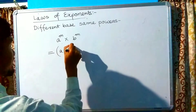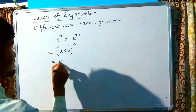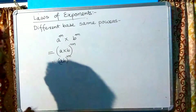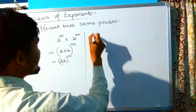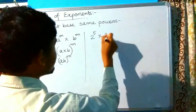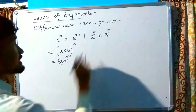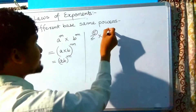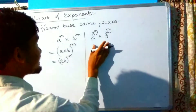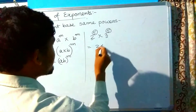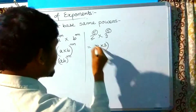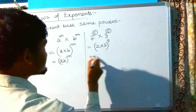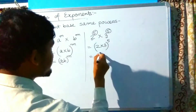Law 4 — Different base, same power: a raised to the power m multiplied by b raised to the power m equals (a multiplied by b) whole raised to the power m. Example: 2 raised to the power 5 multiplied by 3 raised to the power 5. The bases are different (2 and 3) but powers are the same (5), so we get (2 multiplied by 3) raised to the power 5, which is 6 raised to the power 5.